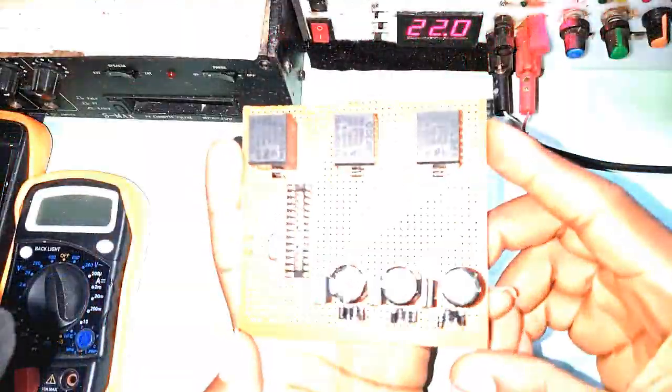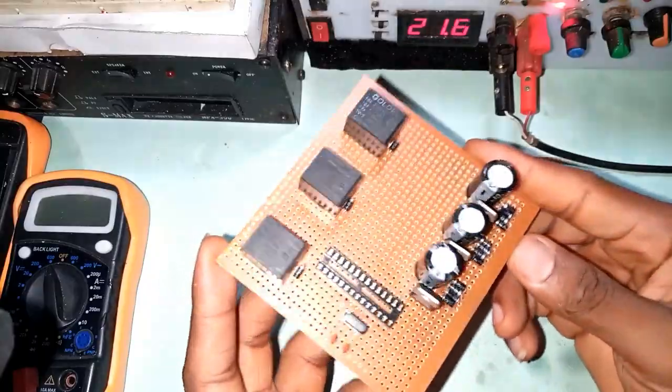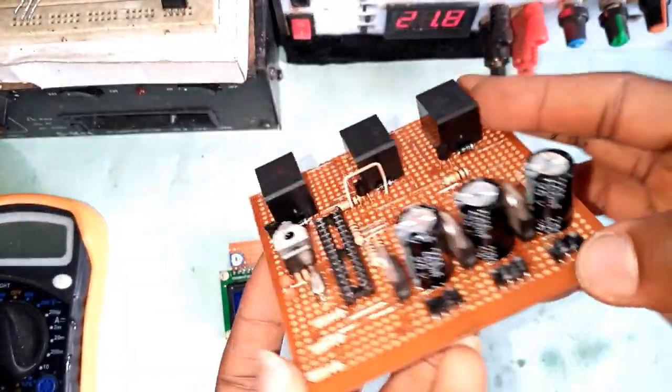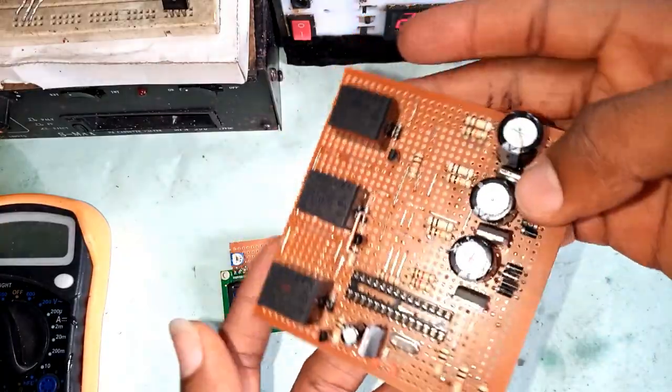The relays were soldered in place and the next is the discrete electronics components. After completing this part, I have the board looking like this.